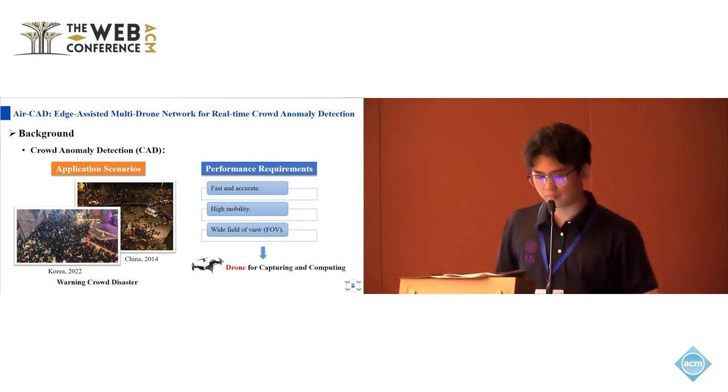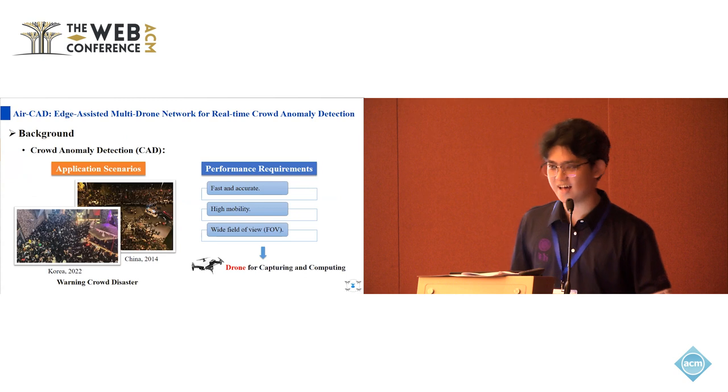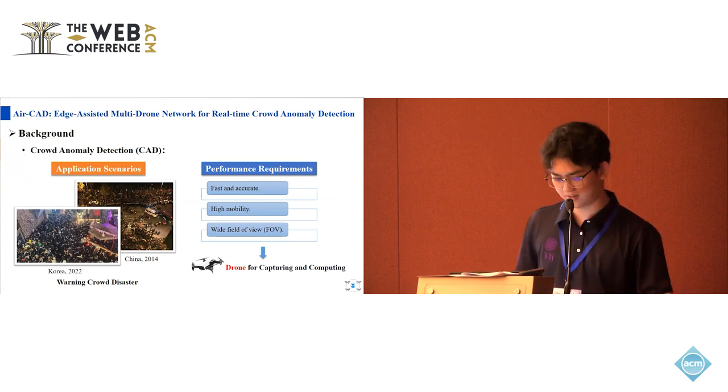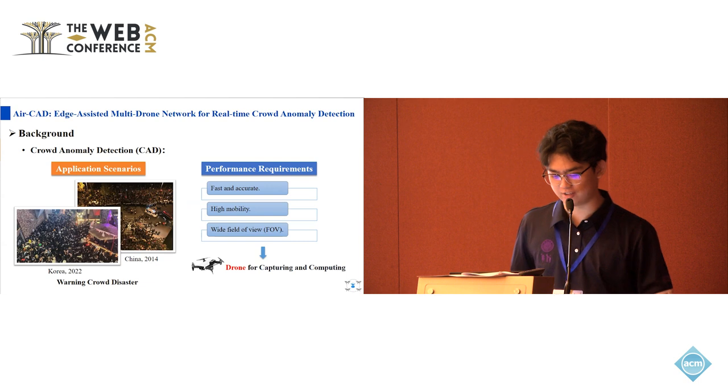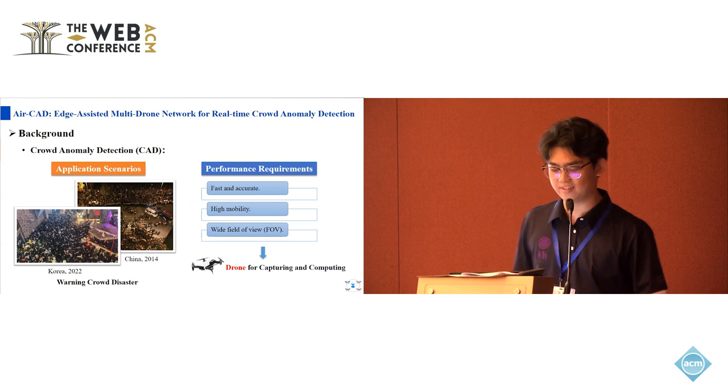As urban populations continue to grow, the risk of crowd disasters in cities is increasing, such as stampedes. The stampedes brought huge casualties and economic losses in many countries, such as China and Korea. Therefore, we hope to timely and accurately detect crowd disasters.